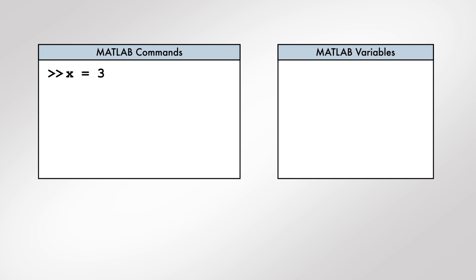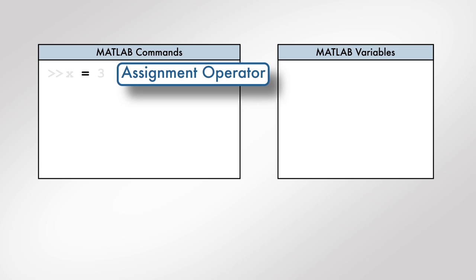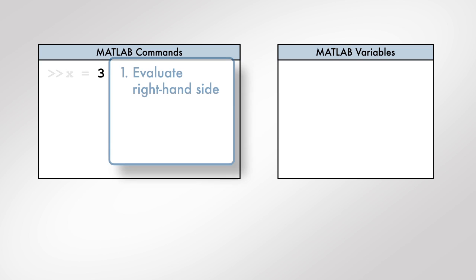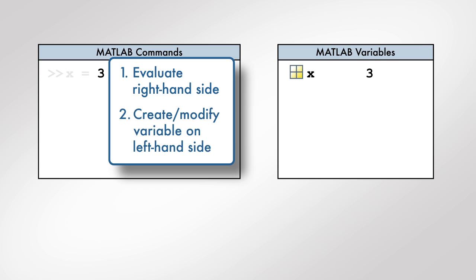In MATLAB, the equal sign is known as the assignment operator. When executing a command with the assignment operator, the value to the right of the equal sign is evaluated, then assigned to a variable whose name is to the left of the equal sign.